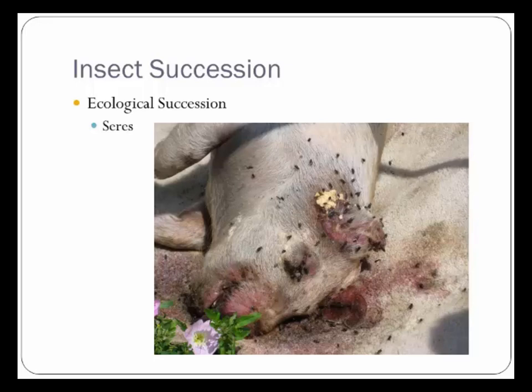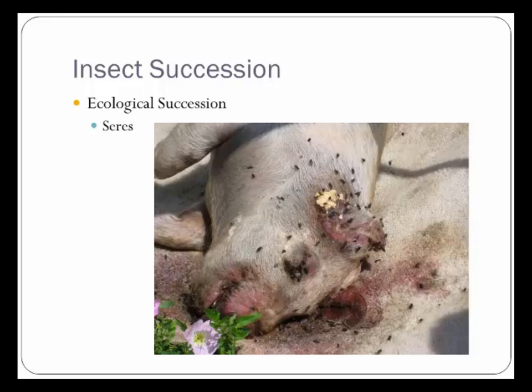I say 'somewhat' because this can change. We won't definitely see a particular species show up exactly within one day while another waits two, three, or four days. It changes depending on the time of year, temperature, and species — some will show up right away or delay two or three days. This predictable sequence is influenced by the environment: where the body is found, the temperature, the season, and the state of the carrion.